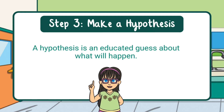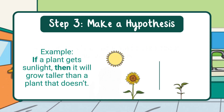Step three: make a hypothesis. A hypothesis is an educated guess about what will happen. It's like a prediction based on what you already know. Many hypotheses are written in an if-then statement. For example, if a plant gets sunlight, then it will grow taller than a plant that doesn't.